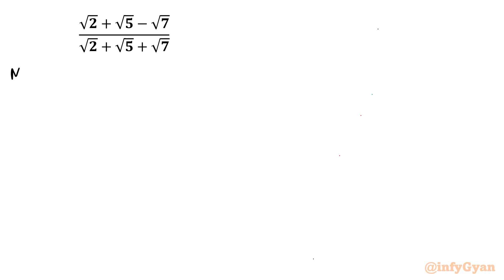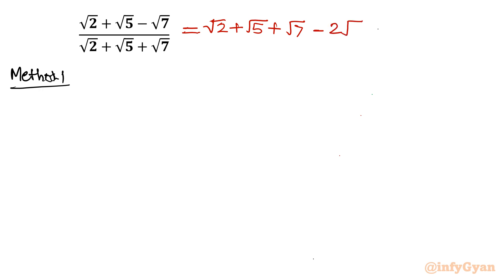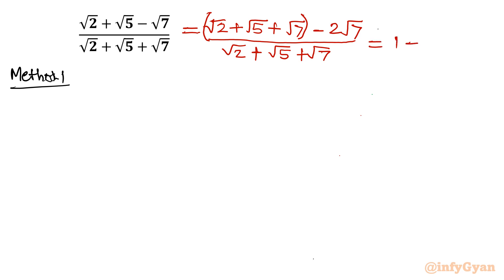Method number 1. I am going to consider our numerator and write it in the pattern of the denominator. So I will write root 2 plus root 5 plus root 7 — this is our denominator written in the numerator. To compensate, because numerator has minus root 7, I need to write minus 2 root 7. Now I will split this numerator with respect to the denominator, so it becomes 1 minus 2 root 7, divided by root 2 plus root 5 plus root 7.